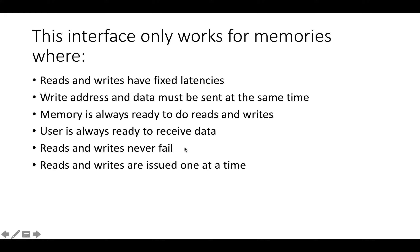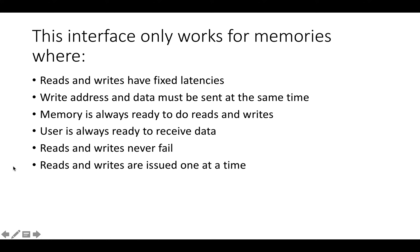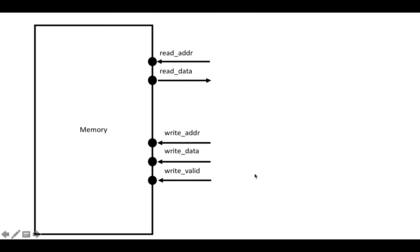Another subtle limitation is that reads and writes never fail. When read data comes back after setting the read address, there are no extra bits indicating whether the read completed successfully. It's just assumed the read succeeded. Same for writes — you wait a fixed number of cycles and assume the write took effect with no failure signals. Finally, reads and writes are issued one at a time: you send a read address, get data, then send another, and the same sequentially for writes.